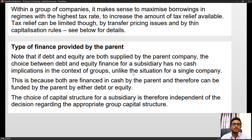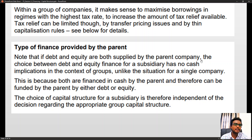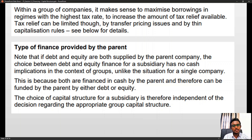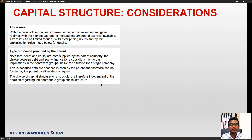Regarding the type of finance provided by the parent: if debt and equity are both supplied by the parent company, the choice between debt and equity finance for a subsidiary has no cash implications at the group level. The choice of capital structure for a subsidiary is therefore independent of the decision regarding the appropriate group capital structure, given that the subsidiary is being fully funded by the parent.